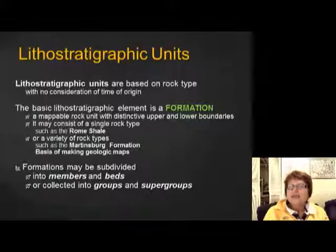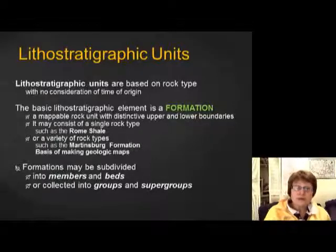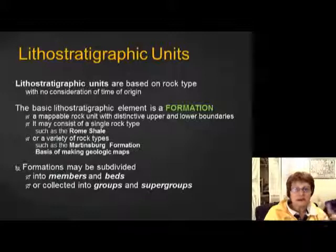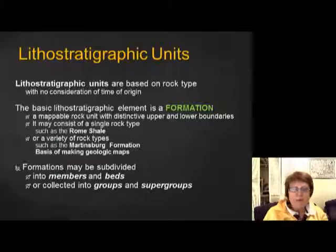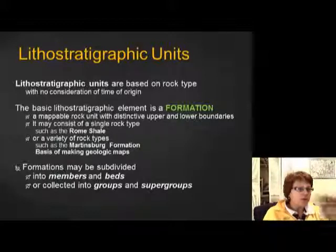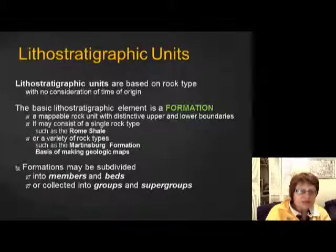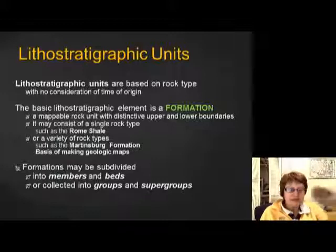The lithostratigraphic units are based on rock type and it doesn't matter what age they are. The basic lithostratigraphic element is a formation — a mappable rock unit which has distinctive upper and lower boundaries. It may consist of just one single rock type, such as the Romshell. Remember in physical geology we went to Fishburne Park — that's a basic lithostratigraphic unit that's mappable and has well-defined upper and lower boundaries, so most of that rock is the Romshell formation.